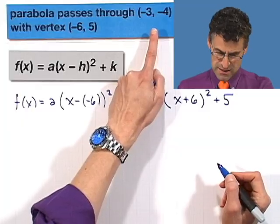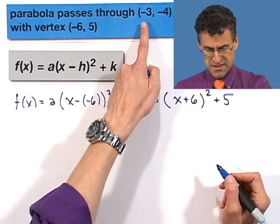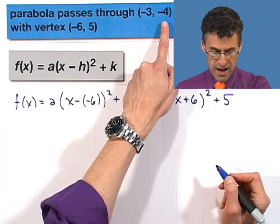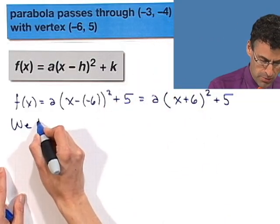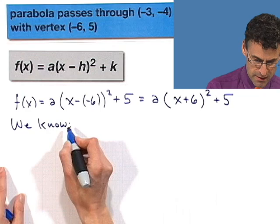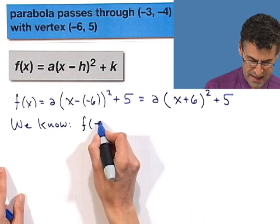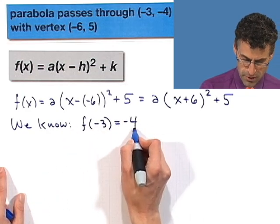What does that mean? It means that when x equals negative 3, y has to be negative 4. Or to write it fancy, we know that f of negative 3 is equal to negative 4.